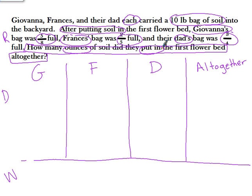The fractions that are shown in the word problem are how much they have left. So if Giovanni has five-eighths of her bag left, then she used three-eighths of it. If Francis has two-fifths of a bag left, then he used three-fifths of it. And if Dad's bag has three-fourths left, then he used one-fourth of it.